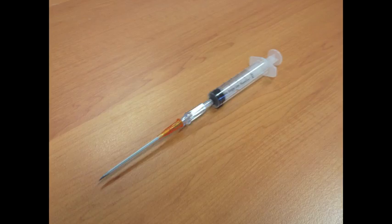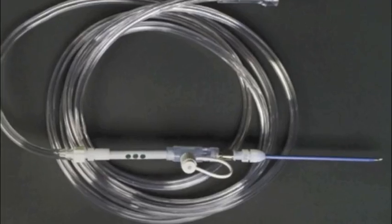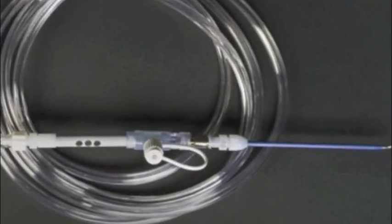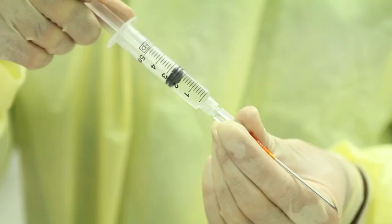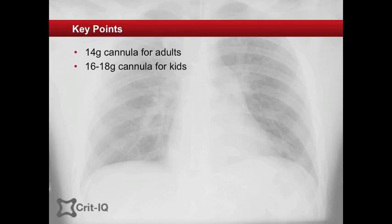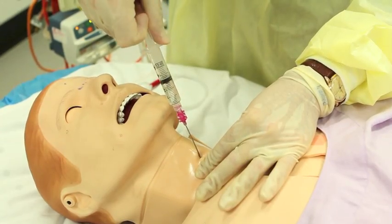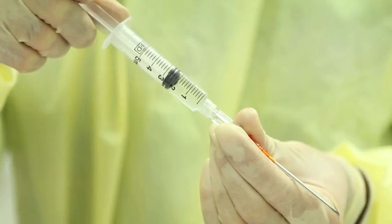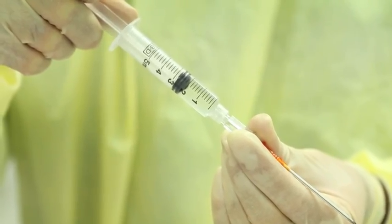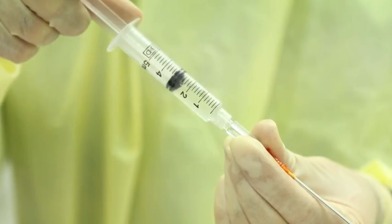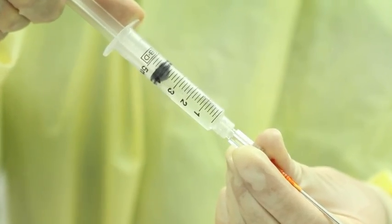Old-style, non-retractable cannulae, or purpose-built cannulae in commercial kits, should be used such that a syringe can be attached to its end. For adults, a 14 gauge is appropriate, while for children, a 16 to 18 gauge cannula is used. Entry into the trachea is confirmed by the aspiration of air into the syringe. Partly filling the syringe with sterile saline enables easy identification of this as demonstrated here.